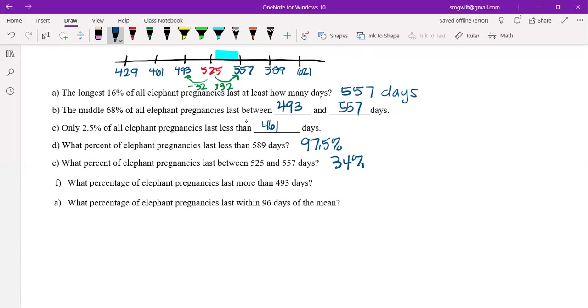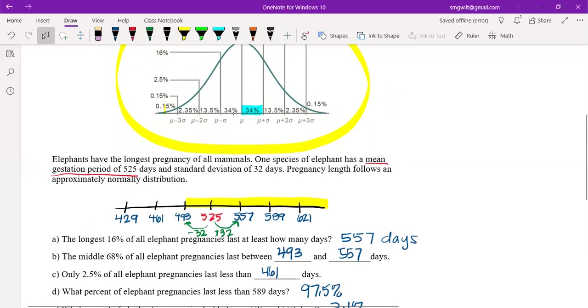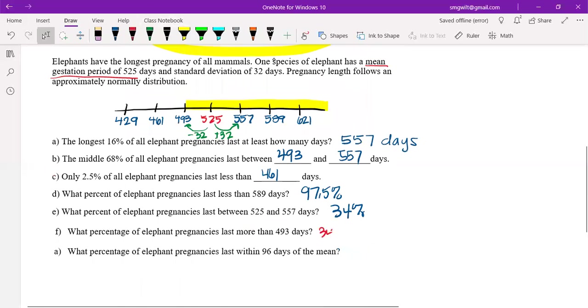For the next one, we have what percent of elephant pregnancies last more than 493 days? So more than means I can't use percentiles. If I find 493, I want to find this area here. So if I'm looking at this, I'm one standard deviation below the mean, that's this. Remember that one thing that we know is once we hit this, all of this is 50%. So 50% of elephant pregnancies last more than 525 days. To figure out how many last more than 493, I just need to add 34 to that. So that's going to be 34 plus 50, which is 84%.